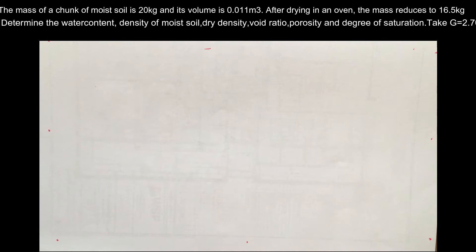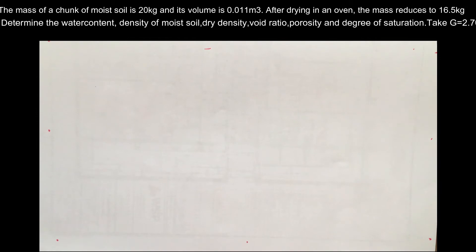The mass of a chunk of moist soil is 20 kg and its volume is 0.011 m³. After drying in an oven, the mass reduces to 16.5 kg. Determine the water content, density of moist soil, dry density, void ratio, porosity and degree of saturation, and Z value.